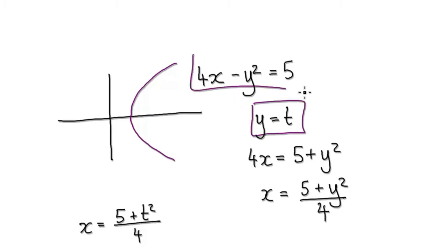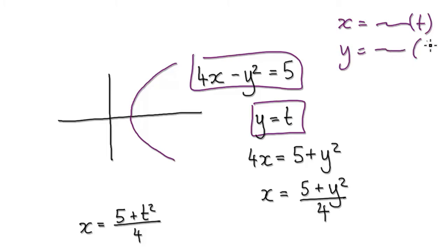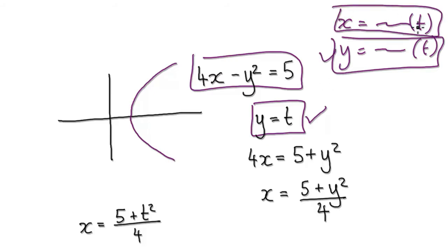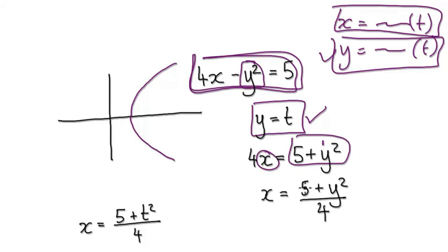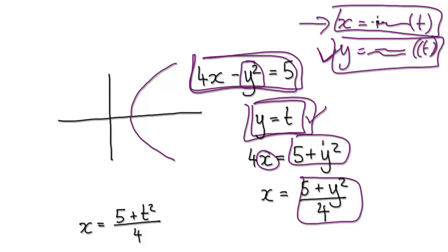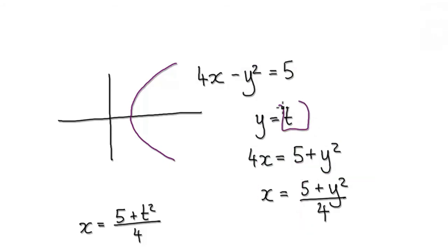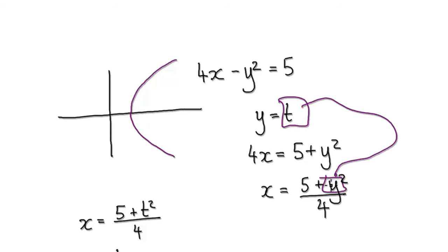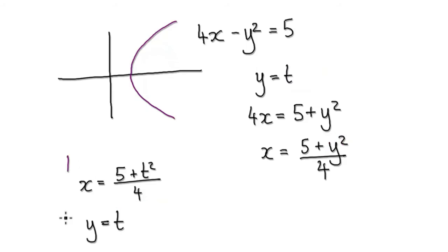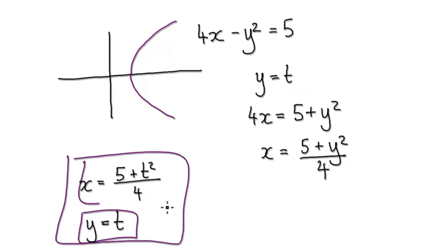Parametric equations will be x equals something involving t, and y equals something involving t. We've done the y equals t part. Now we need x to be something involving t. Starting from the original equation, rearrange it to make x the subject — add y squared to both sides, then divide both sides by 4. That gives us x equals this expression. Since y equals t, we can substitute t in, giving us our parametric equations: y equals t, and x equals the expression involving t.